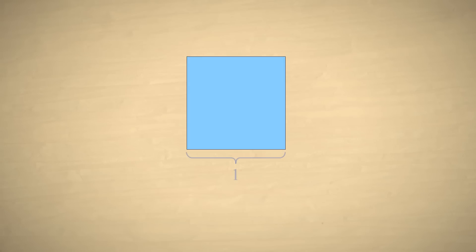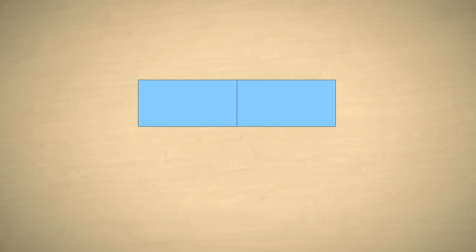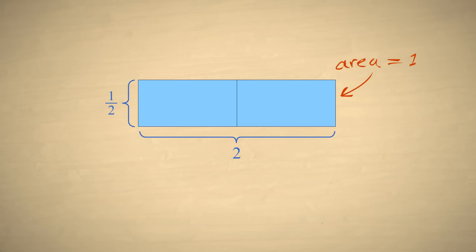We can visualize the concept of reciprocals by using a square with the width and height of one. Since the area of a square, or rectangle, is equal to its width times its height, the area will be one. Now if we slice the square into two equal pieces and lay them end-to-end to create a rectangle, the area of the rectangle will be the same as the square — one. However, its width will be two and its height will be one-half. So we can see that two times one-half is one. Therefore, two and one-half are reciprocals.